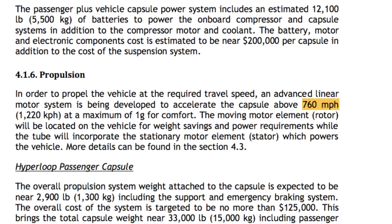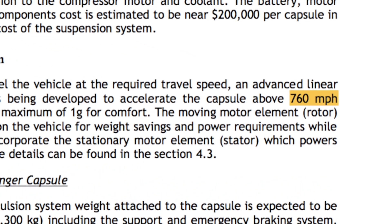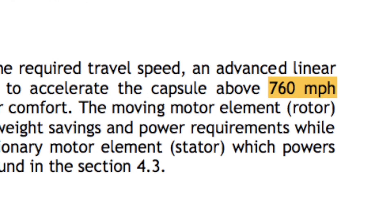In Hyperloop Alpha, Elon Musk estimated a top speed of 760 miles per hour. He chose this value because it's lower than the speed of sound, but according to NASA, it's not low enough.